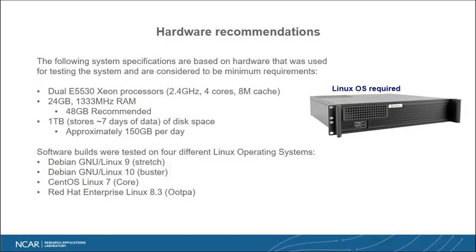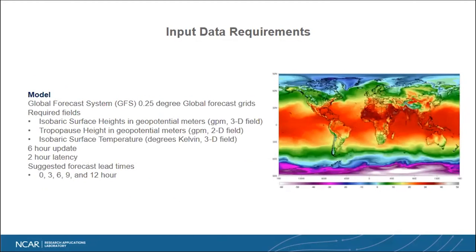For data requirements, first there's the model data. We use the GFS 0.25-degree global forecast grids. There are three fields: isobaric surface heights, which is a 3D field in geopotential meters; tropopause height, which is a 2D field; and isobaric surface temperatures, another 3D field. That data updates every six hours with typically a two-hour latency, and we use multiple forecast lead times to cover the case where a model run doesn't show up, so we don't lose the model data.